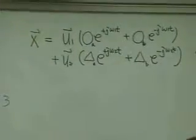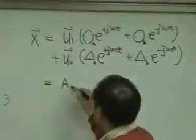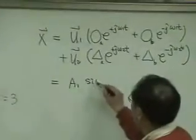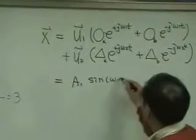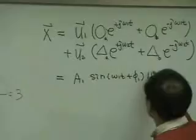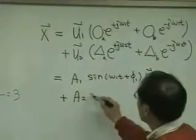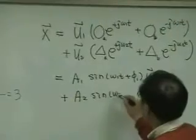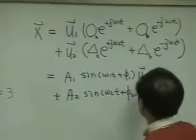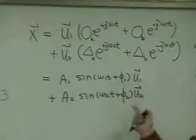Or I can write this as used in the text: A1 sine omega 1 t plus phi 1 u1 vector, and plus A2 sine omega 2 t plus phi 2 u2 vector. And note that we know u1 and u2.